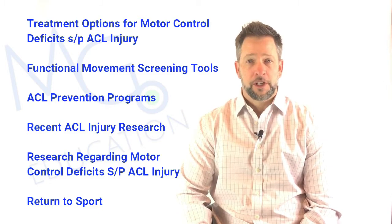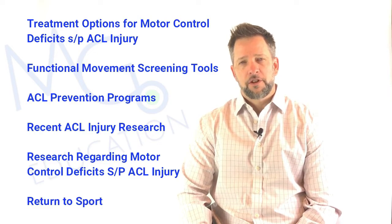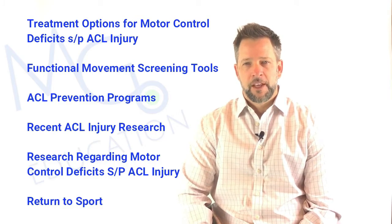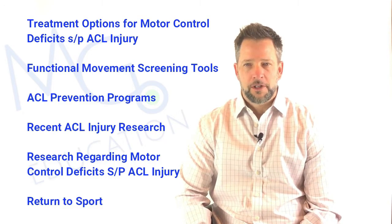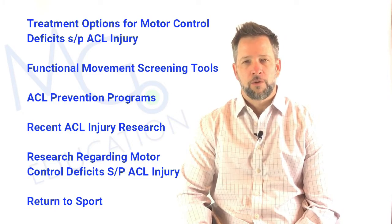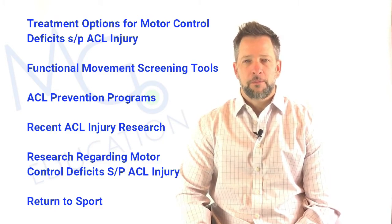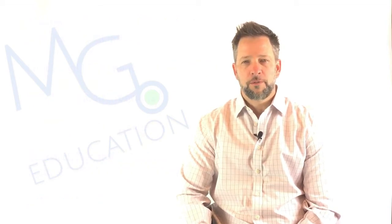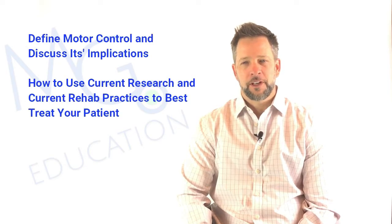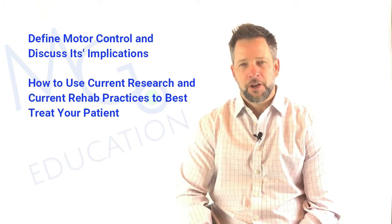We'll discuss the pros and cons of those programs and review current factors surrounding ACL injury. We'll present current literature evidence of where and when motor control deficits occur in this population, discuss return to play parameters, and possible factors that might influence how your patient or athlete returns to the playing surface. We'll also define motor control and motor learning and discuss their importance in movement, then give options for observing and treating these deficits and coordinating all this data to get the most out of your patient or athlete.